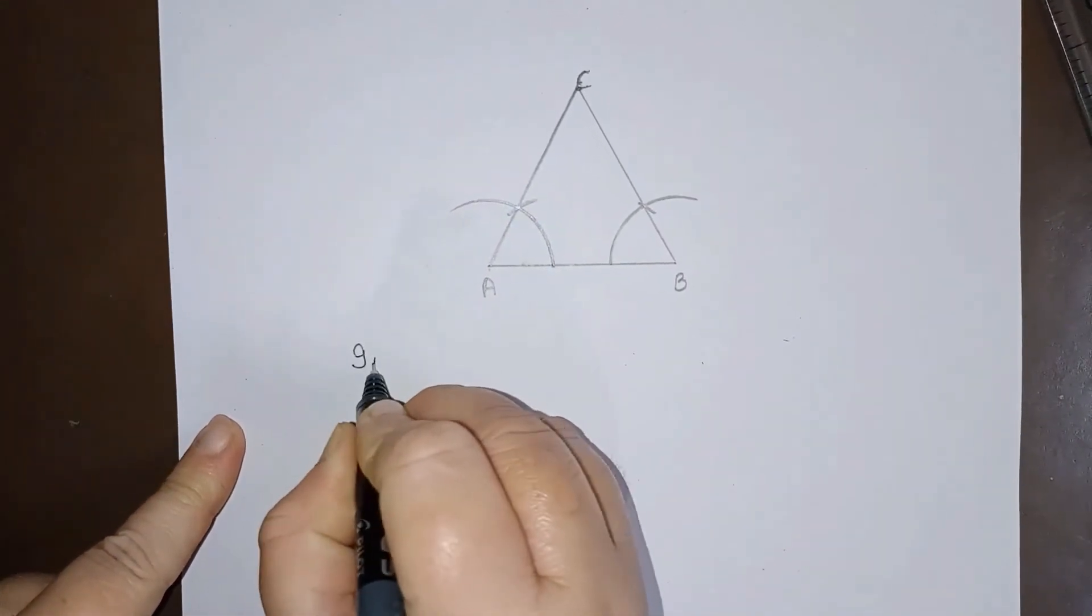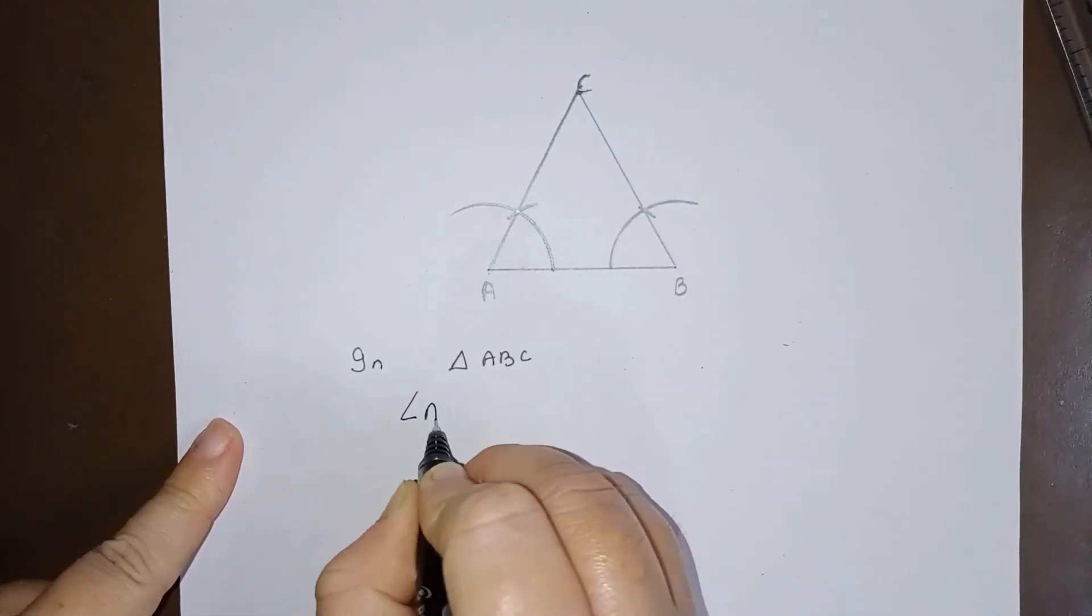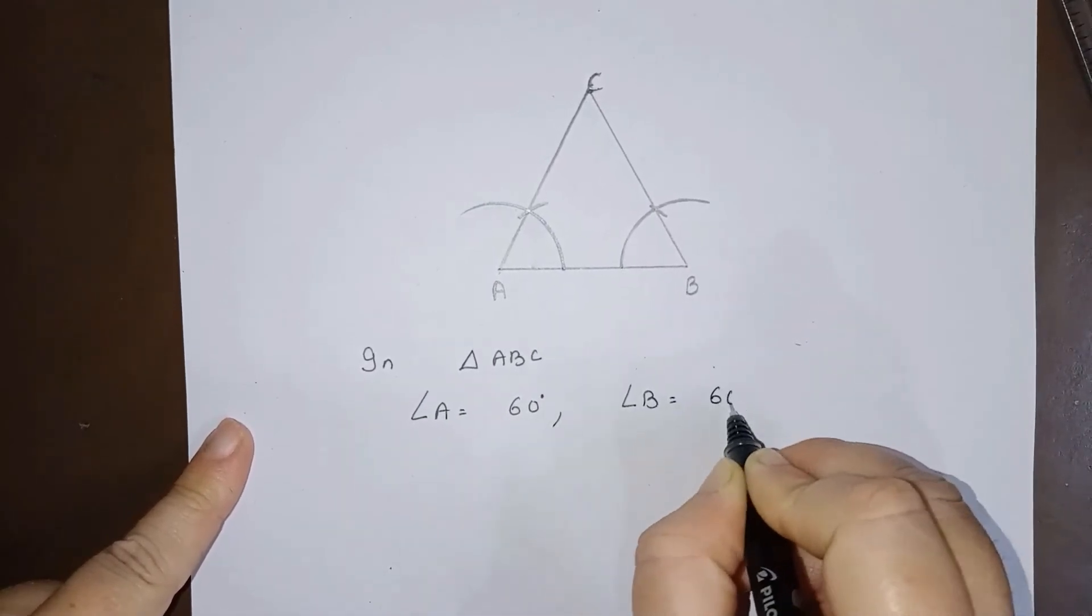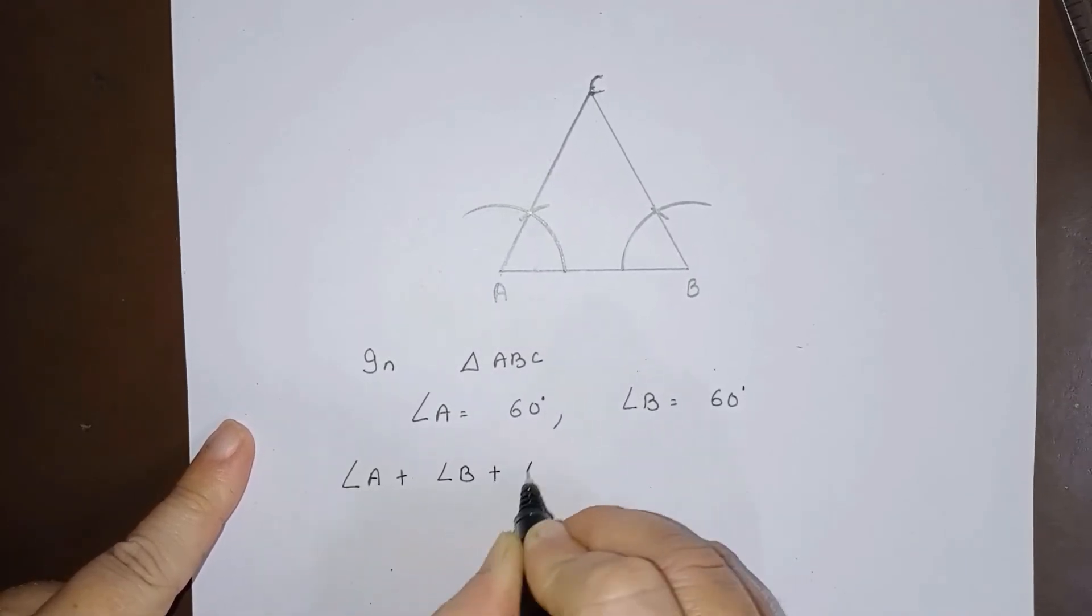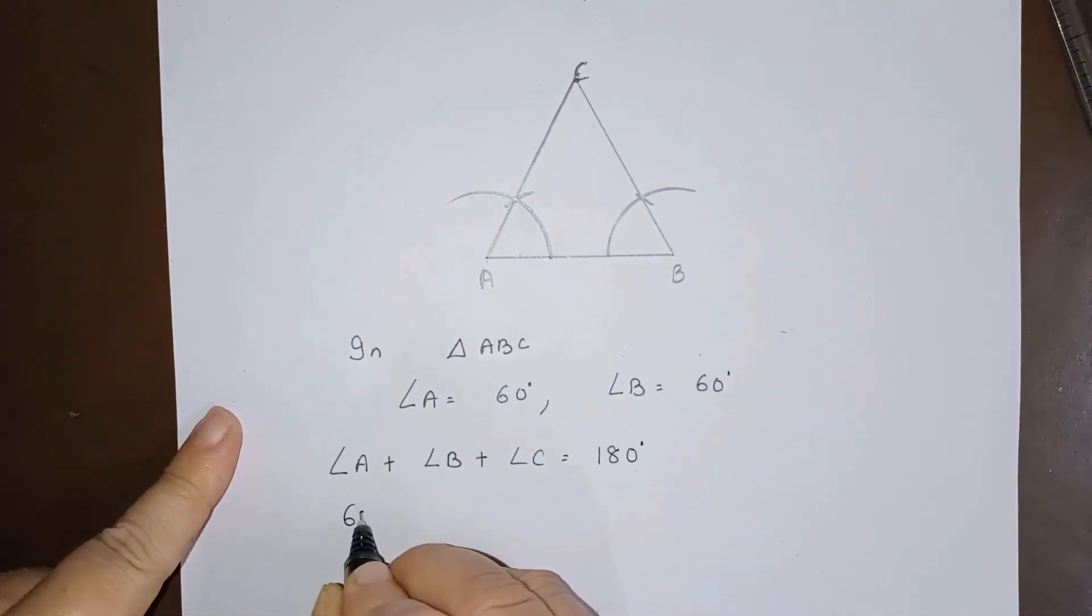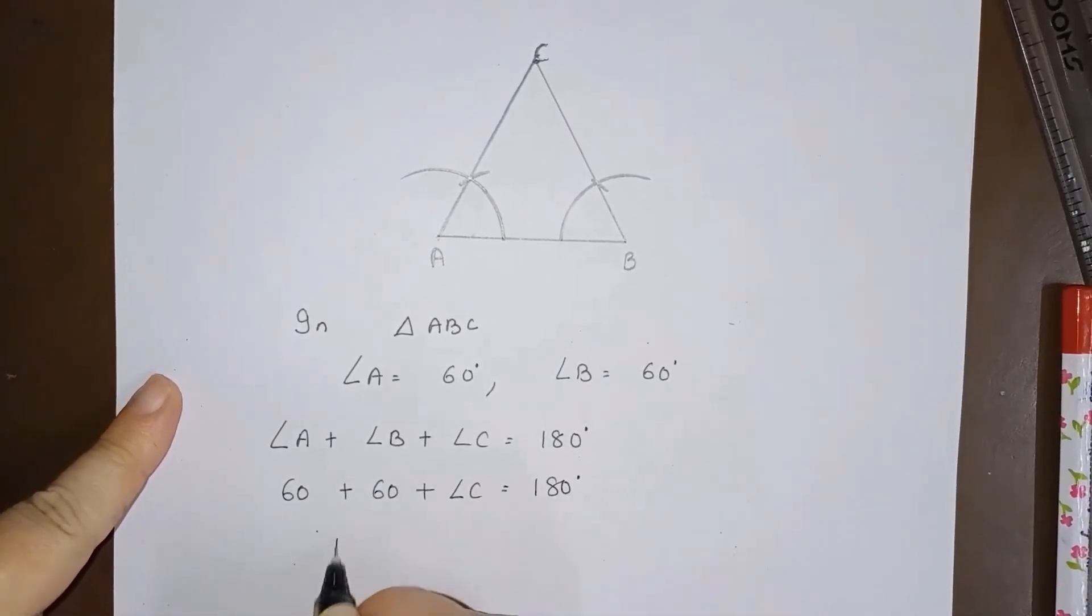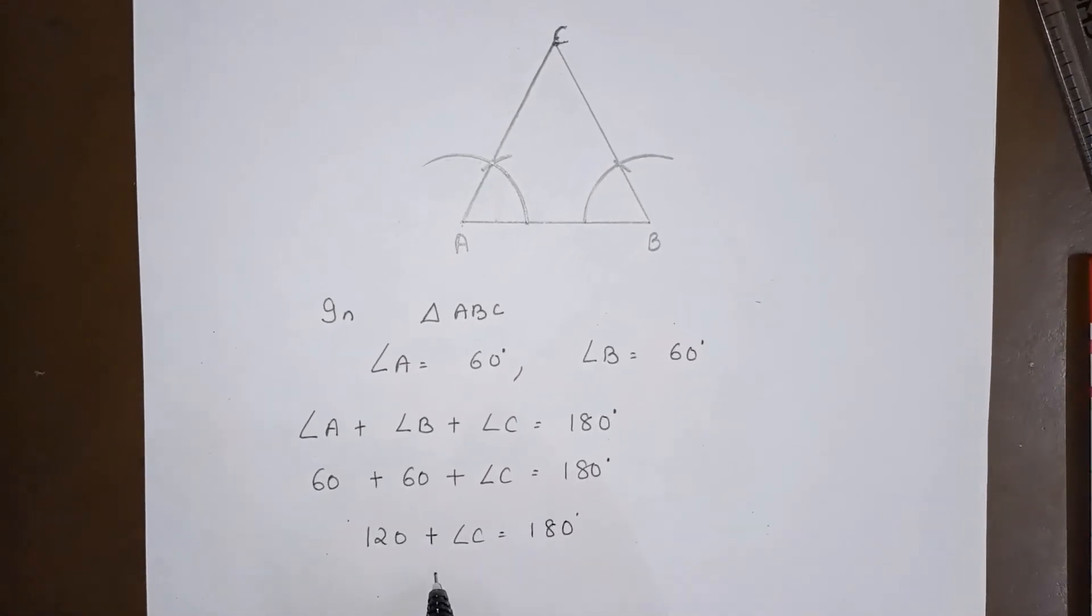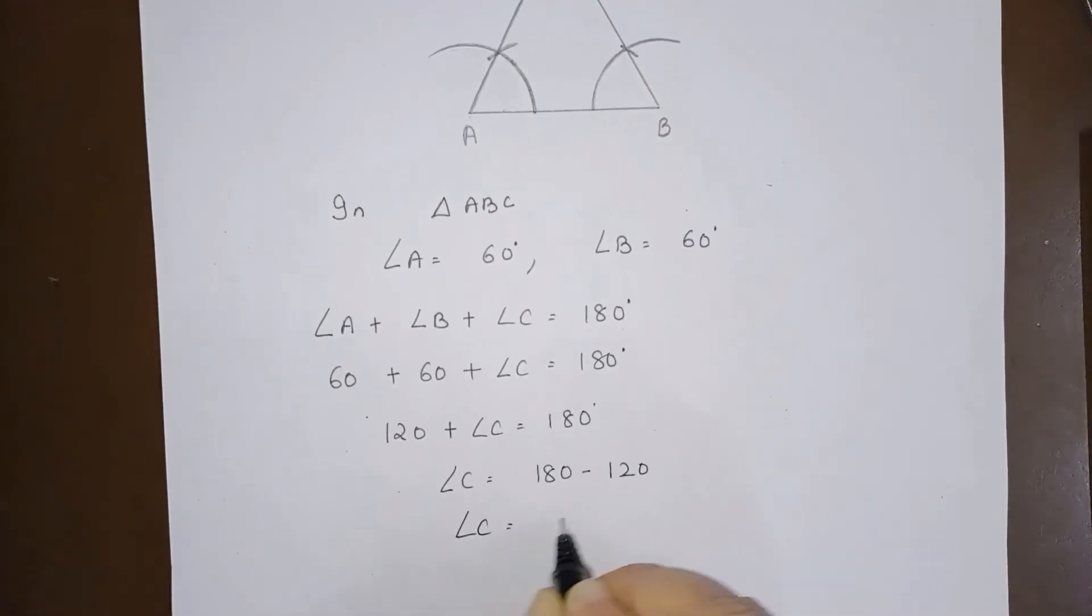Now in triangle ABC, angle A is 60 degree, angle B is 60 degree. Now angle A plus angle B plus angle C is 180 degree, so 120 plus angle C is 180 degree. So angle C will be 180 minus 120, angle C is 60 degree.